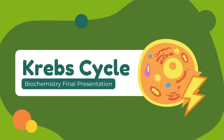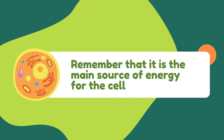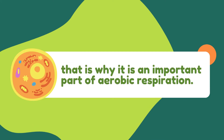The Krebs cycle is also known as the citric acid cycle, or the tricarboxylic acid — TCA — cycle. Remember that it is the main source of energy for the cell, which is why it is an important part of aerobic respiration.